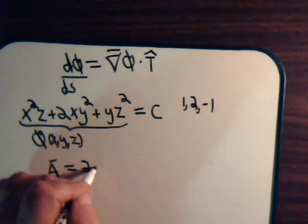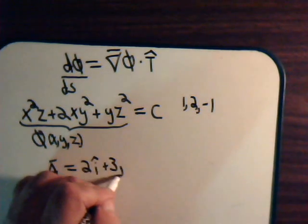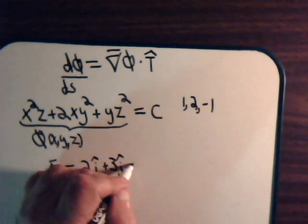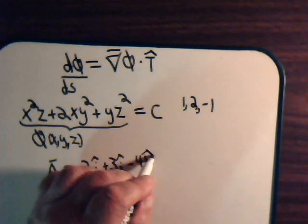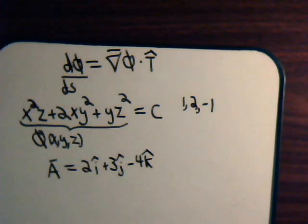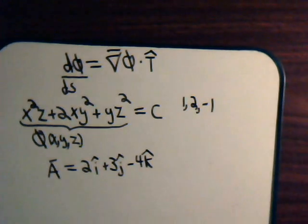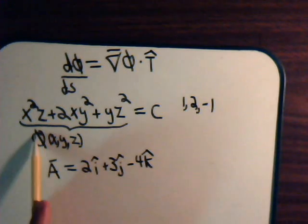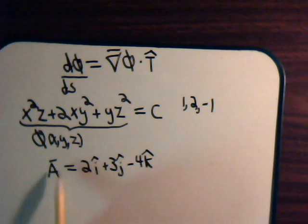And also on the surface there's a vector A. Let's say it looks like this: 2i plus 3j minus 4k. Suppose now we're on the surface at this point and we're asked to find what is the rate of change of the scalar in the direction of this vector.